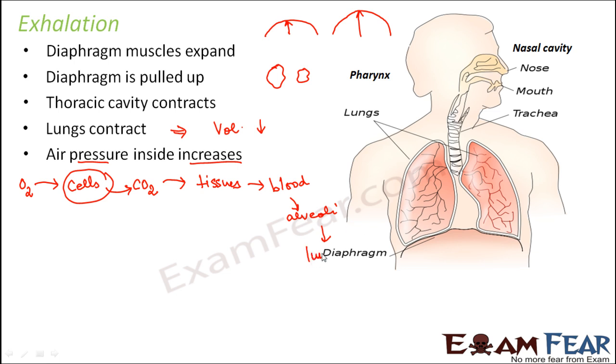From the blood vessels it goes to the alveoli, which is basically present inside the lungs, and from lungs it goes to the outside. This is the process that takes place in exhalation. This explains how the air goes out and why the air goes out from lungs to outside, because of the pressure difference.